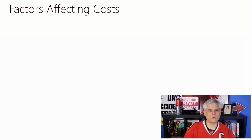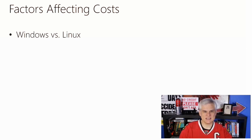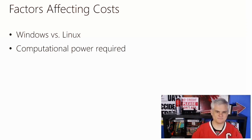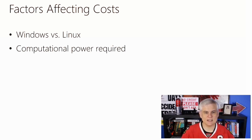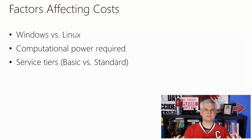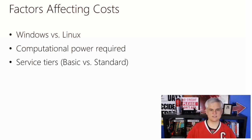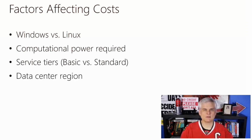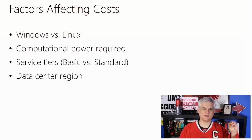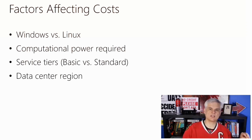The first pricing factor is whether you need Windows or Linux — Windows is more expensive. The second is compute power in terms of number of processors, RAM, and disk space. The third factor is the tier of services you want to make available to your virtual machines — for example, services like load balancing and auto-scaling are available at a premium. There's a basic tier, which is pretty much bare bones, and then the standard tier gives you access to all those other services. The fourth factor is the data center region you deploy your virtual machines into — some regions cost more.